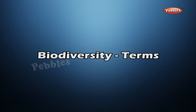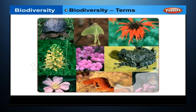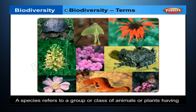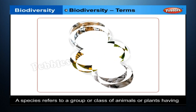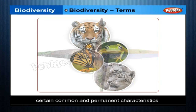Let us learn some of the terms associated with biodiversity. A species refers to a group or class of animals or plants having certain common and permanent characteristics that clearly distinguish it from other groups.